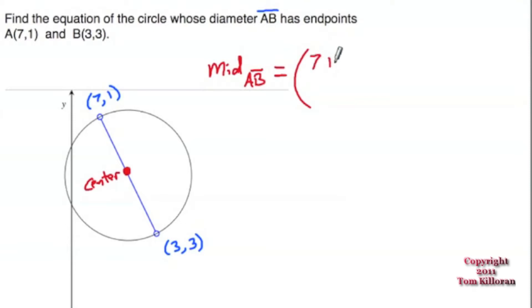The x's are 7 and 3 between A and B. We're going to find the average, so add them together and divide by 2. The y-coordinates are 1 and 3, add those together and divide by 2. So the center of this circle is going to have a coordinate of 7 plus 3 is 10, divided by 2 is 5. And 1 plus 3 is 4, divided by 2 is 2. So the center of this circle is (5,2).